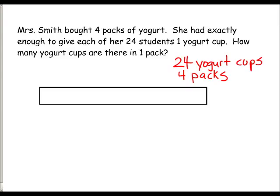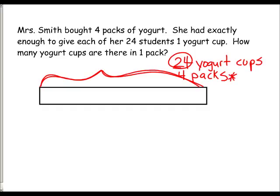This entire bar model, or tape diagram, represents those 24 yogurt cups. Because this entire bar right here is 24 yogurt cups, we have to look at the four packs and cut our diagram into four equal parts. Once they've split it into four, they're going to label the tape diagram with the question mark.